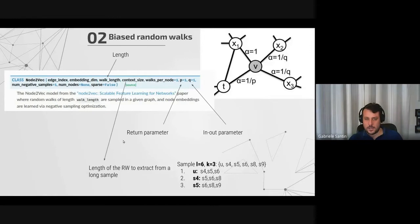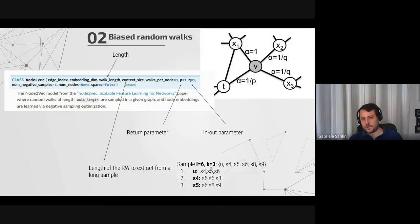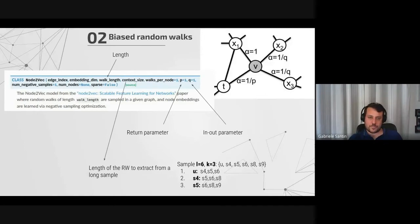The walk_length and context_size correspond to l and k respectively. The name 'context' comes from the analogy with word embedding algorithms — in that case the context was given by neighboring words in a sentence. Here, k equals the context size, the length of the neighborhood window, and walk_length l is the length of the long random walk sampled for computational convenience.